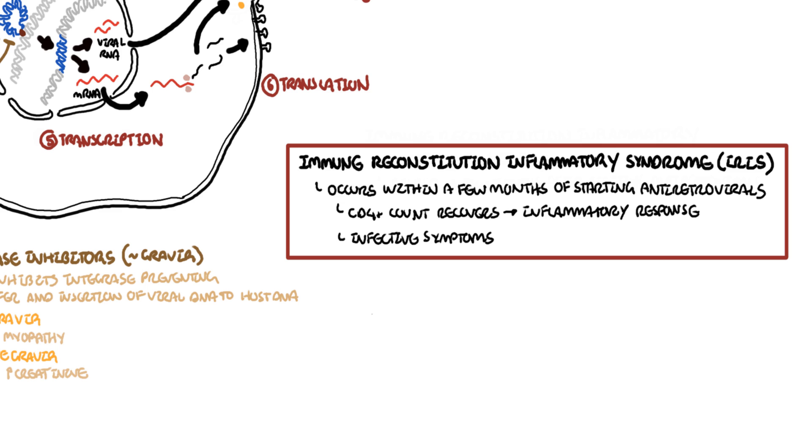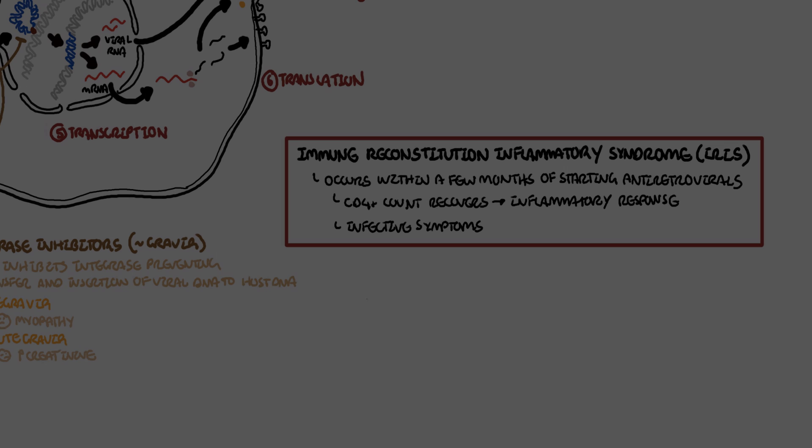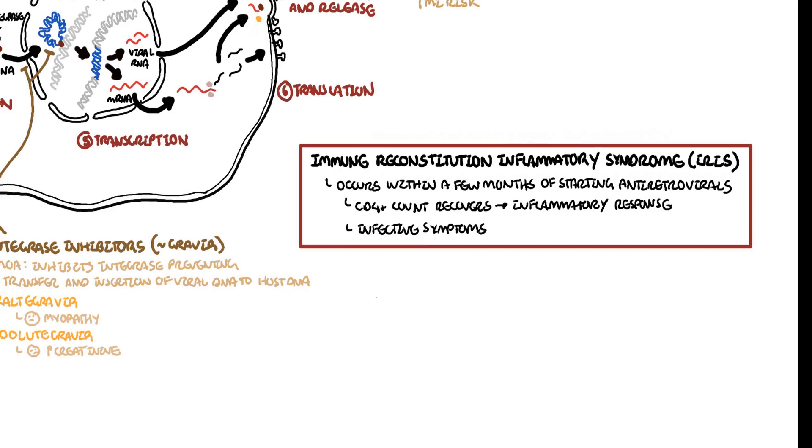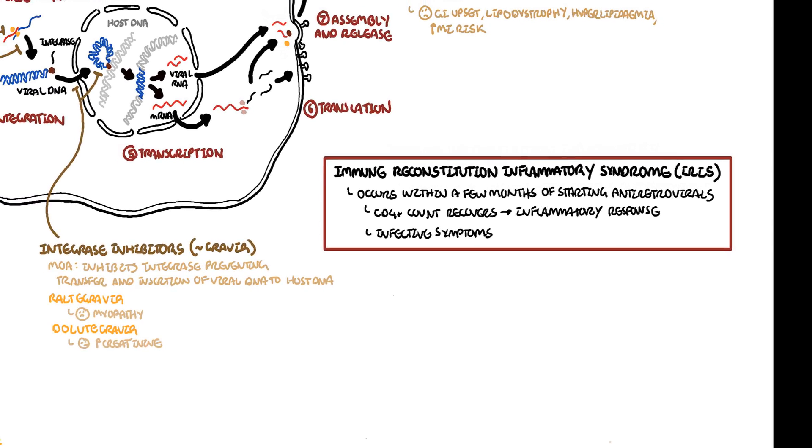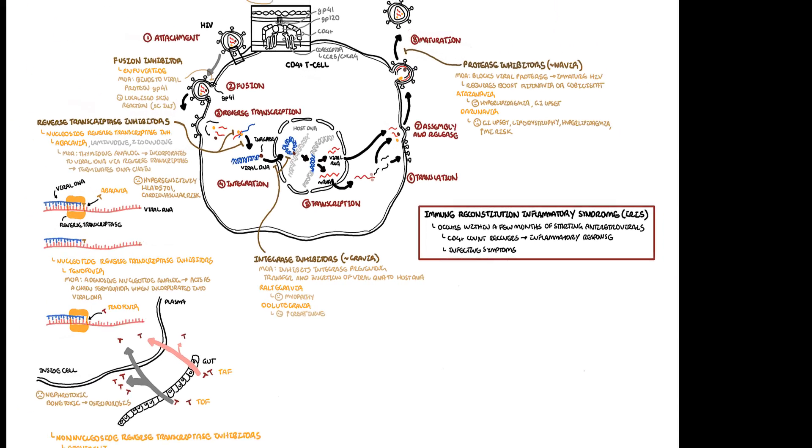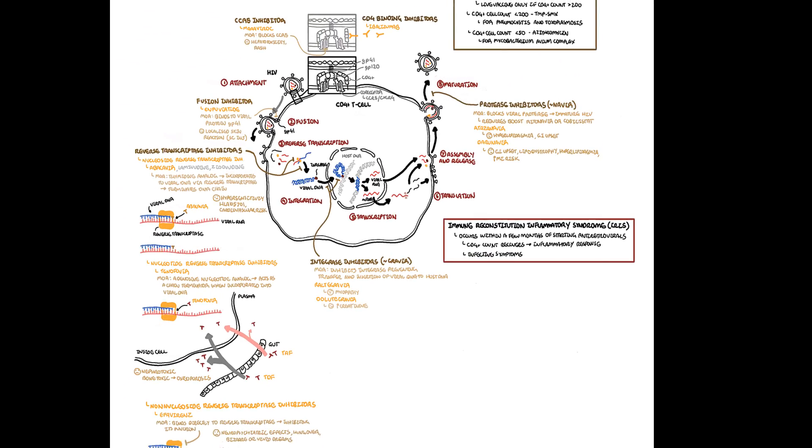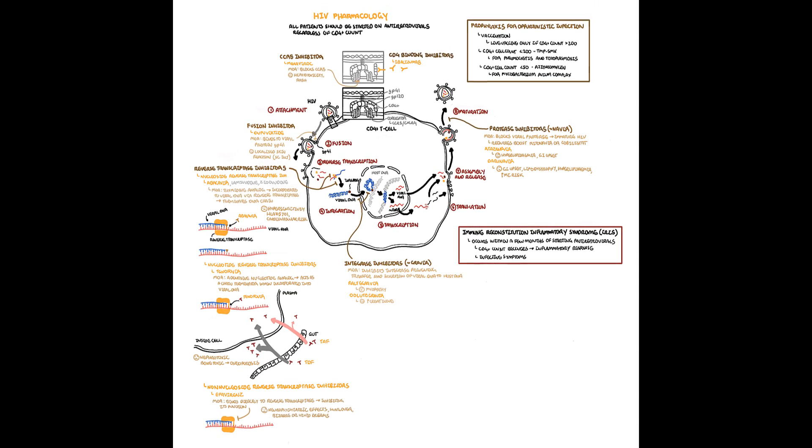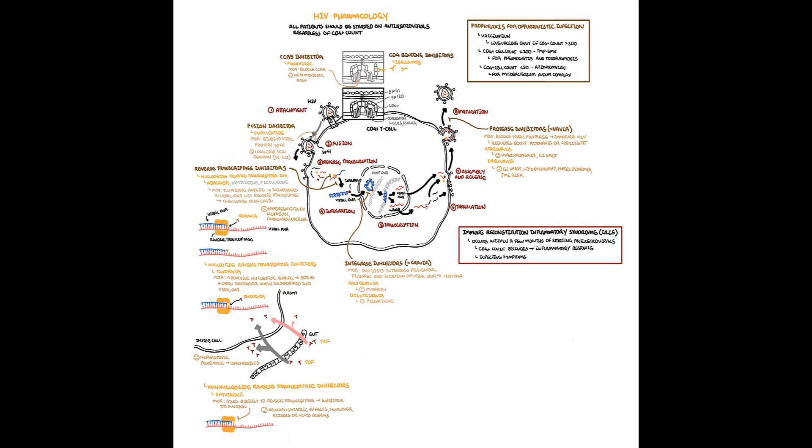To conclude, the antiretrovirals used for HIV are used in combination. So for example, a reverse transcriptase inhibitor with an integrase inhibitor. And that concludes the video on HIV pharmacology. In this video, we looked at the HIV life cycle and we looked at how the antiretrovirals target different parts of the HIV life cycle. The important ones to remember include the reverse transcriptase inhibitors, integrase inhibitors, and the protease inhibitors. Thank you for watching.